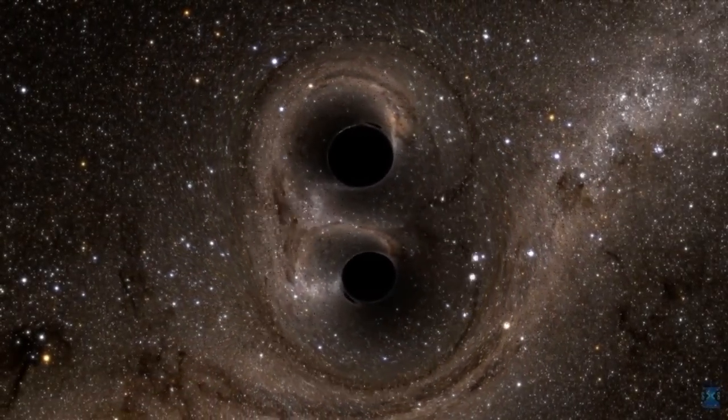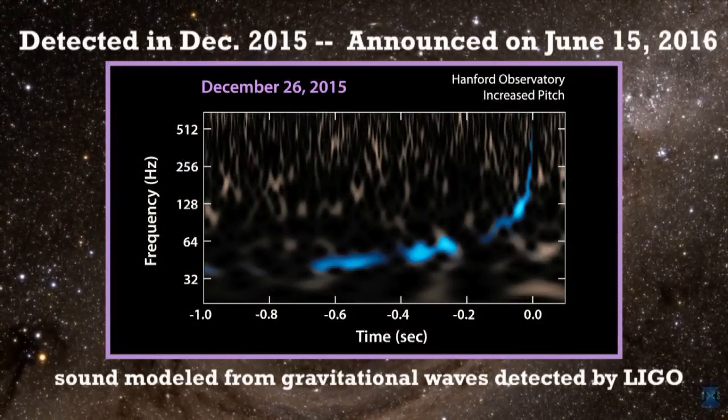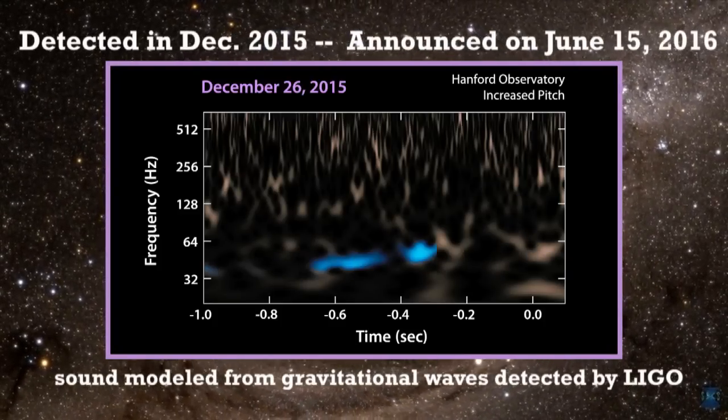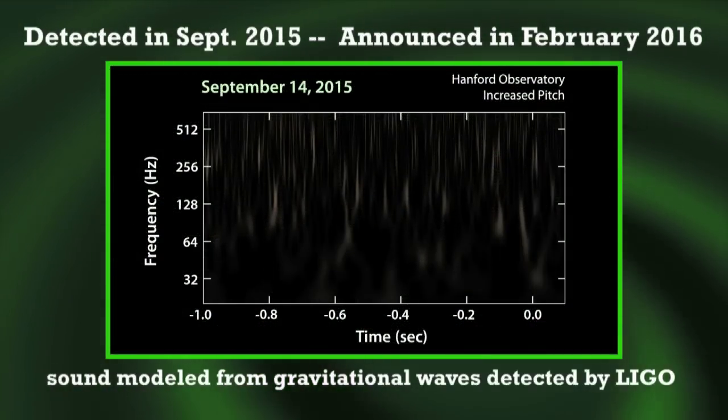Scientists with LIGO announced the detection of the two black holes on June 15th. This is only the second time that scientists have ever directly detected gravitational waves. The first detection, also made by LIGO, was announced earlier this year.